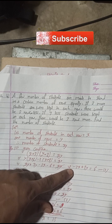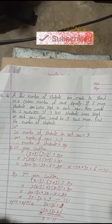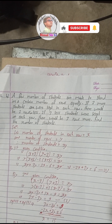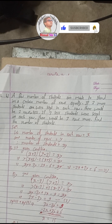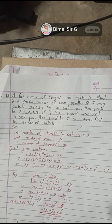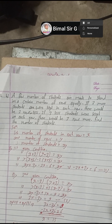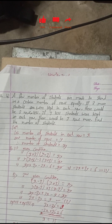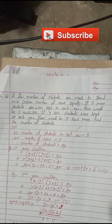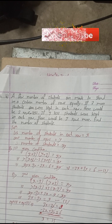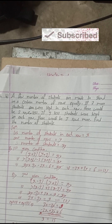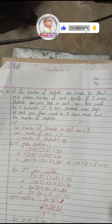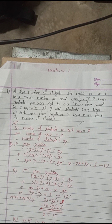Now substituting x = 15 into Equation 1: −2(15) + 3y = 6, which gives −30 + 3y = 6. So 3y = 6 + 30 = 36, therefore y = 36 ÷ 3 = 12. So y equals 12.